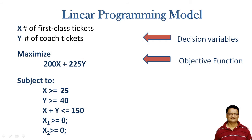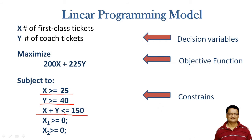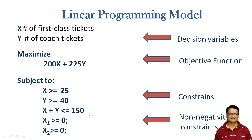The objective function is subjected to three constraints: the number of first class tickets must be greater than or equal to 25, the number of coach tickets must be greater than or equal to 40, and the total plane capacity is 150, so x + y ≤ 150. The non-negativity constraint states that x and y must be zero or greater, since ticket counts cannot be negative.